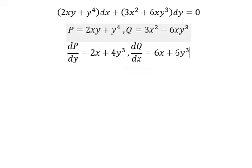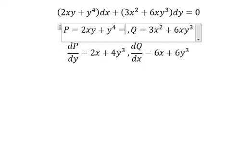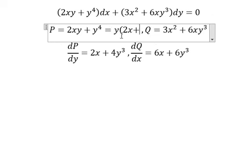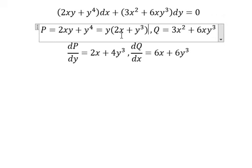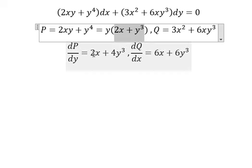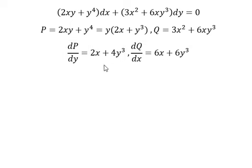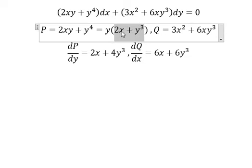If we look carefully, these values are not the same, so this is not exact. But if we look here, we can do factorization by y. We can see the same common factor in here. And if we use this one minus 2x and this one minus this one, we have 4x plus 2y to the power of 3.